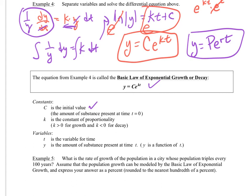C is the initial value. Now you got to be careful with these because sometimes you have extra constants that hang out. They add different things to it. So c, you just got to watch for it if it has extra stuff. And then k is the constant of proportionality. k greater than zero is for growth. k less than zero is for decay. t is the variable for time. And then y is the amount of substance at a particular time.